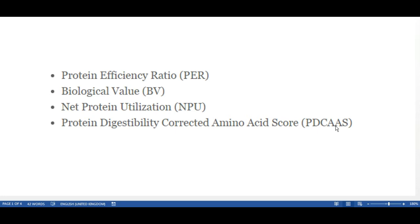There's net protein utilization which takes the percentage of amino acids which are actually converted into protein and used by the body. And then there's PDCAAS which is about the quality of protein based on the essential amino acids that are there and the ability of your body to digest those amino acids and it uses a scale between 0 and 1.